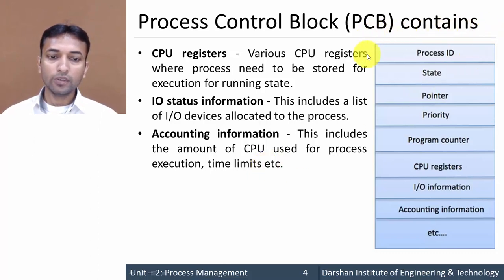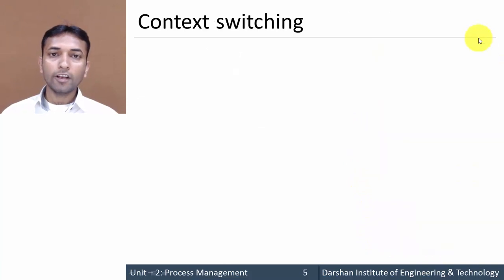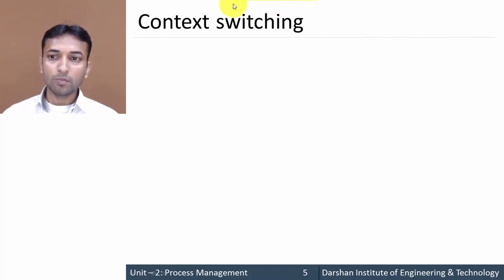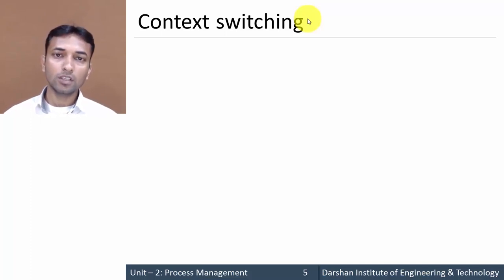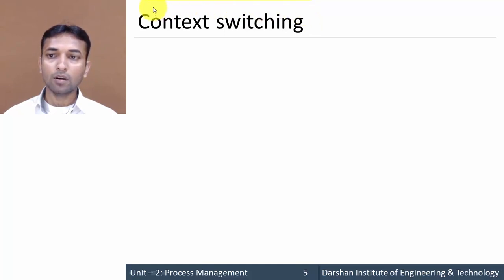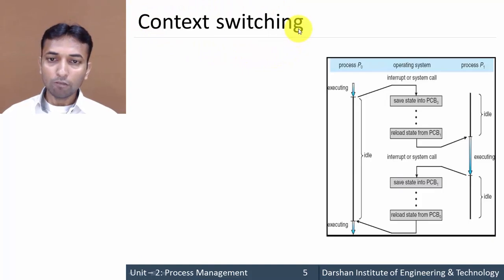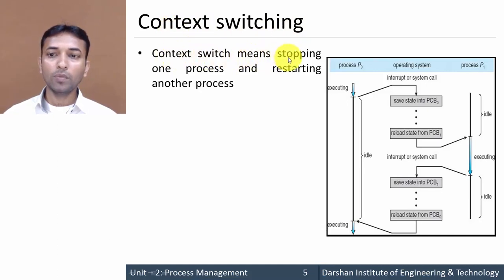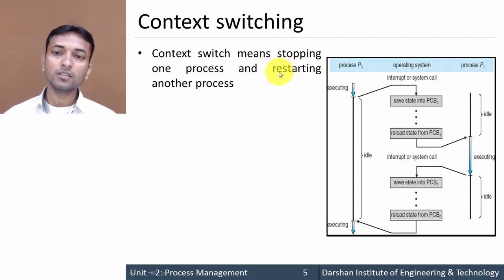These are the different fields of the Process Control Block. Now let's move on to Context Switching. This concept is mainly used in multiprogramming — the ability of a CPU to execute more than one process at the same time. Whenever the CPU supports multiprogramming, context switching occurs between two or more processes. Context switching is defined as the stopping of one process and restarting another process.